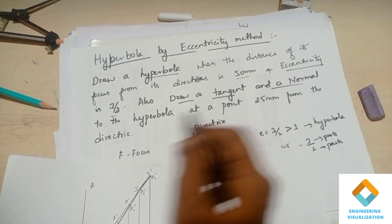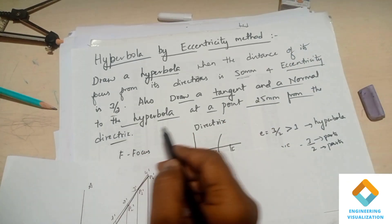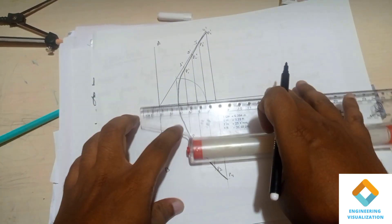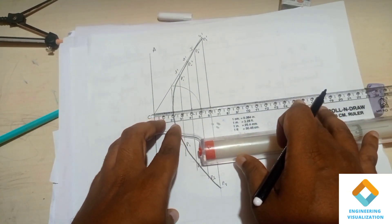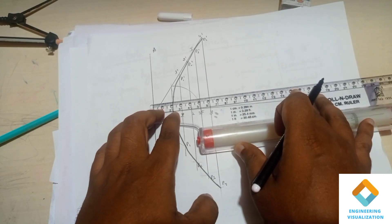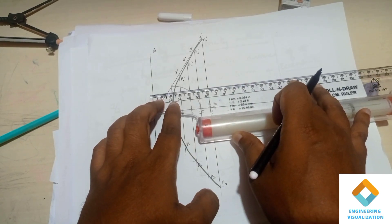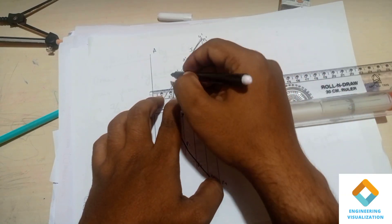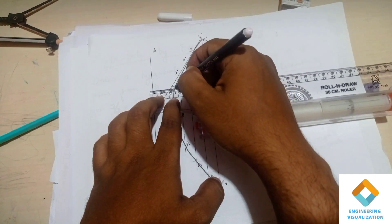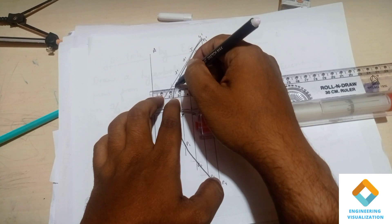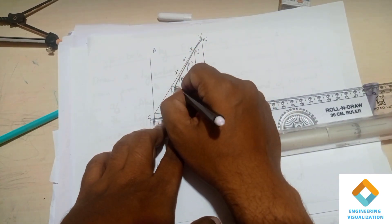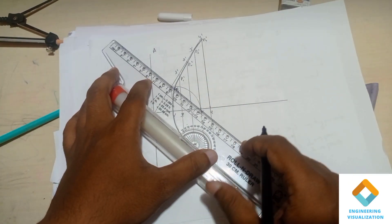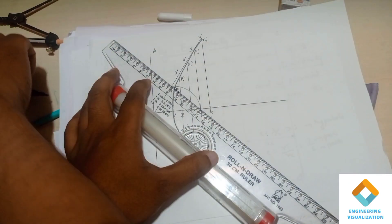Now we draw the tangent and normal to the hyperbola. As per the problem, draw tangent and normal at a point 25 mm from the directrix. From the directrix, measure 25 mm and move the scale vertically upward to find where it meets the hyperbola. Mark that point as E. Connect E and focus point F with a straight line.